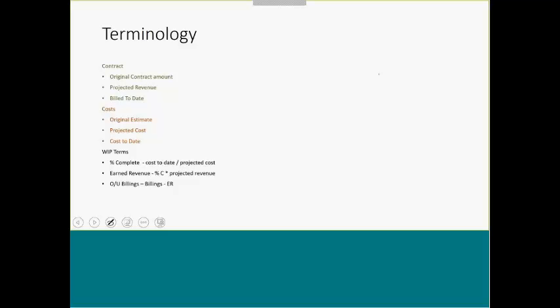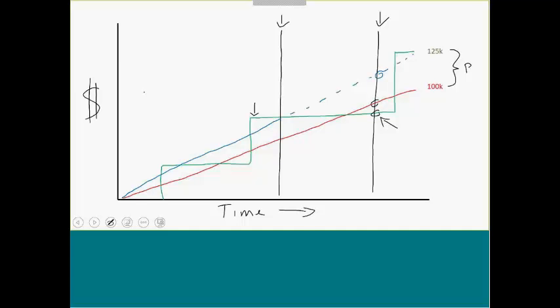You have a bunch of different things that go on. And so at the end of the job, after all is said and done, you have a different amount than what you originally signed up for. And that's expected. And that's the difference between these first two terms. Original contract amount is what you thought you were going to bill as of the inception of the job. And our projected revenue is what, at any point in time, what we expect to actually bill. So it's our original contract amount plus all expected change orders.